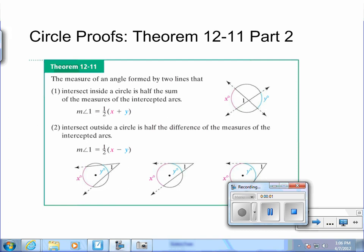Here is the proof of Part 2 of Theorem 12-11, which states the measure of an angle formed by two lines that intersect outside of the circle is half the difference of the measures of the intercepted arcs. And we're going to prove this theorem as it applies to two secants that intersect outside of the circle.